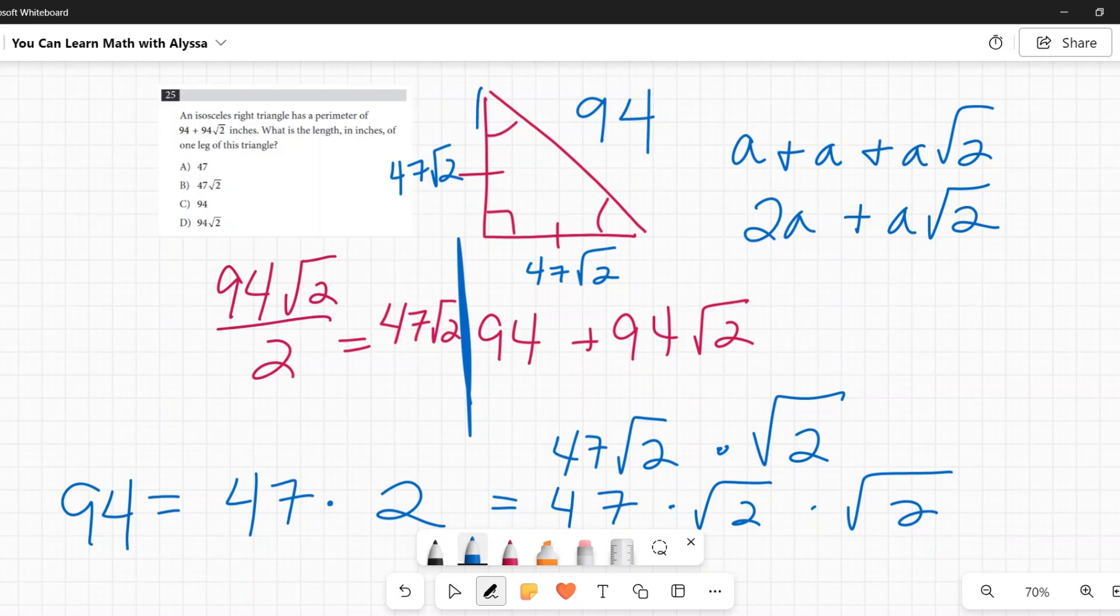So I'm saying then that this side up here is 94. Now let's see if this works. The perimeter would be adding these together: 47 square root of two plus 47 square root of two plus 94. You treat the square roots of two like x's because you're adding them. 47 square roots of two plus 47 square roots of two gives you 94 square roots of two, and then I would add the hypotenuse which is 94.